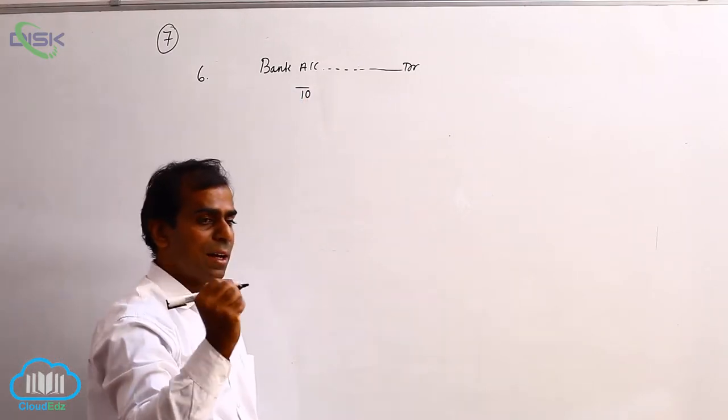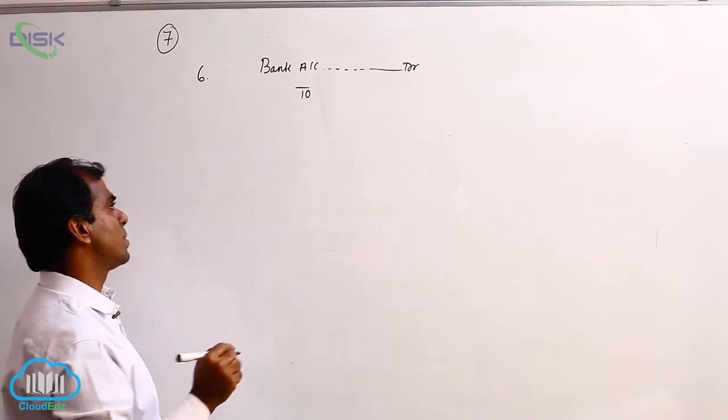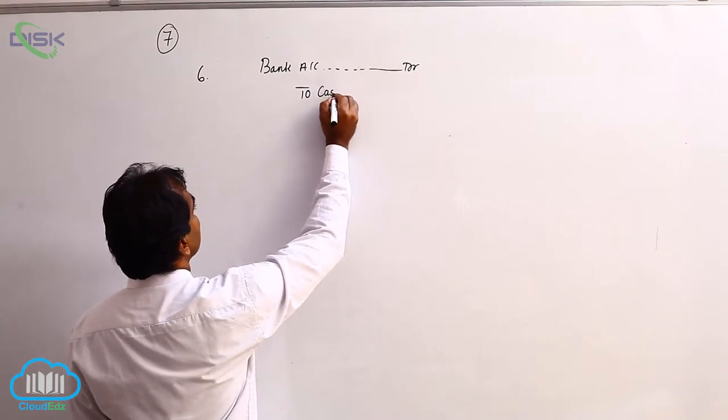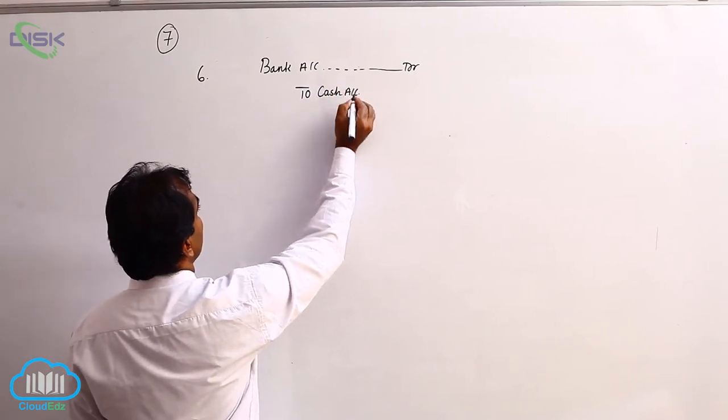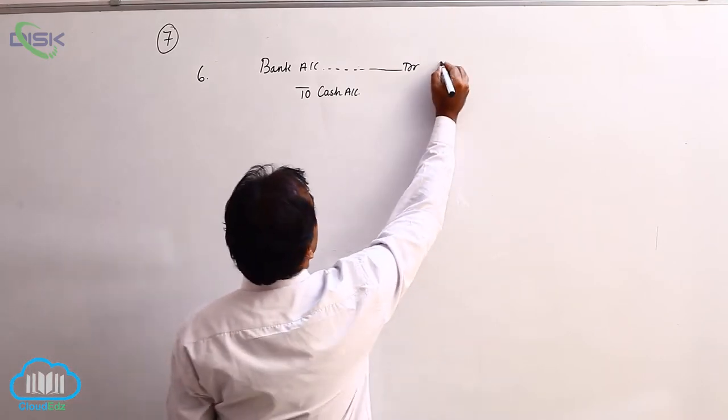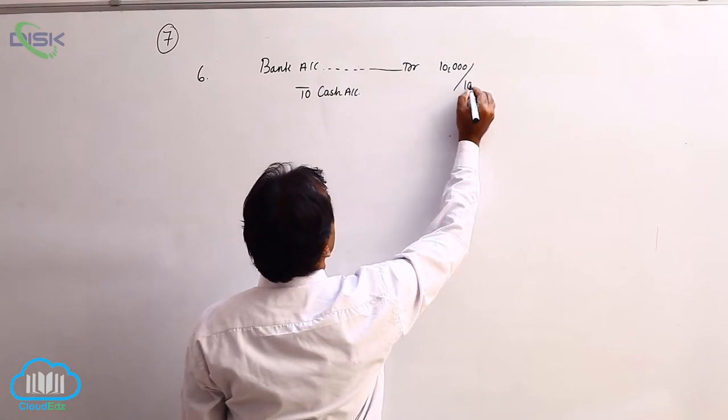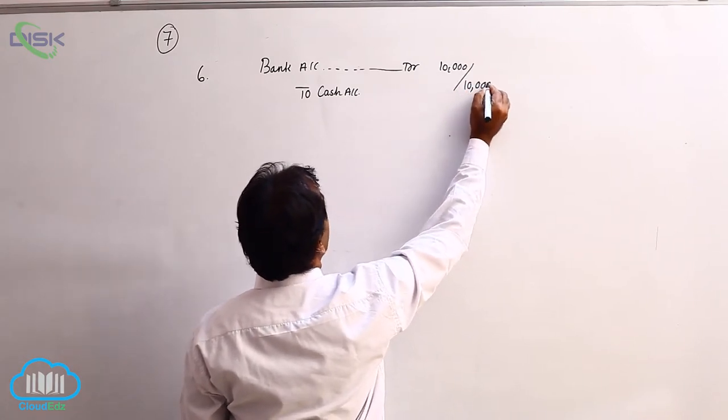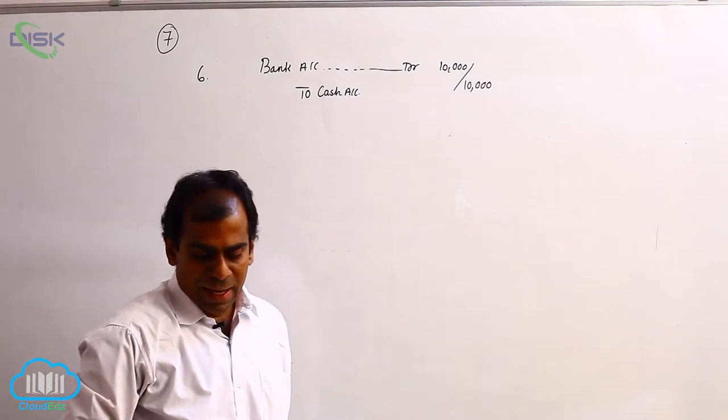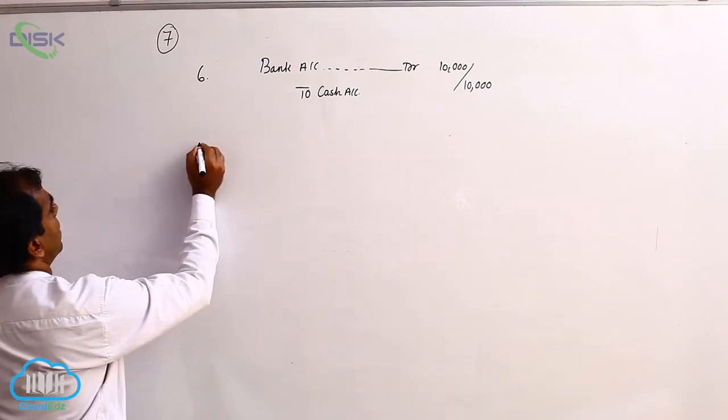Cash is a real account. The rule for real account is credit what goes out. Cash is going out, so we credit cash account. Bank account debit to cash account, the amount being 10,000. Your narration would be: being deposit of cash into bank, or being cash deposited into bank. Now the last transaction, on the 7th, is paid salaries.